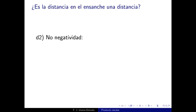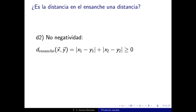Veamos la no negatividad, o positividad semidefinida. Tomamos |X₁−Y₁| + |X₂−Y₂|: ese número tiene que ser positivo o cero, porque el módulo de un número real no puede ser negativo. ¿Y si la distancia es cero? Como estamos sumando dos números positivos o cero, para que la suma sea cero ambos han de ser cero, lo que implica X₁=Y₁ y X₂=Y₂, es decir, los dos puntos son iguales.